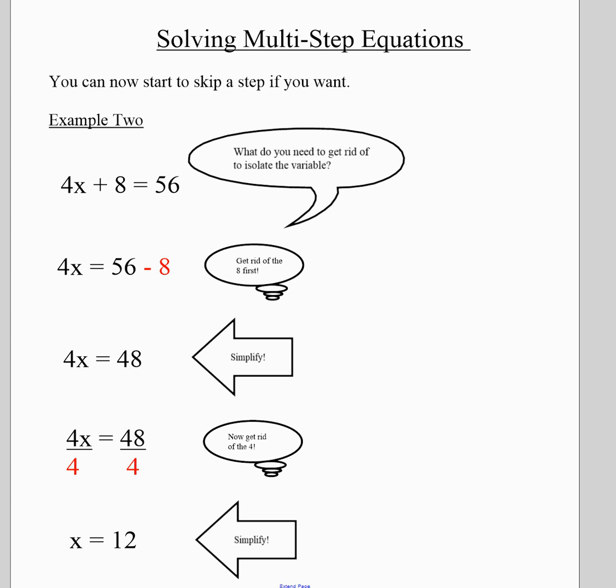To get rid of adding 8, I subtract 8. If I subtract 8 from this side, I'm just left with 4x. So what this step is showing is that on the left-hand side, I'm left with 4x. And on the right-hand side, I subtracted my 8.